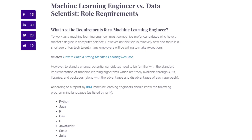I couldn't find similar surveys for ML engineers, but it's fair to assume a very similar number will need advanced degrees, spanning computer science as well as mathematics. ML engineers also need to know programming languages. According to Springboard, citing a report from IBM, machine learning engineers should know the following languages ranked from most to least important: Python, Java, R, C++, C, JavaScript, Scala, and Julia.